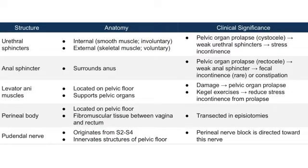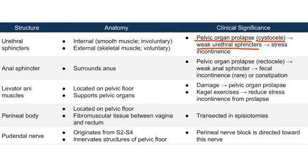An important clinical tie-in for the urethral sphincters is pelvic organ prolapse, specifically cystocele. Pelvic organ prolapse and cystocele were discussed in the previous lecture. Cystocele means that the bladder is protruding posteriorly into the vaginal wall, and when this happens, the urethral sphincters get weak, which can lead to stress incontinence.